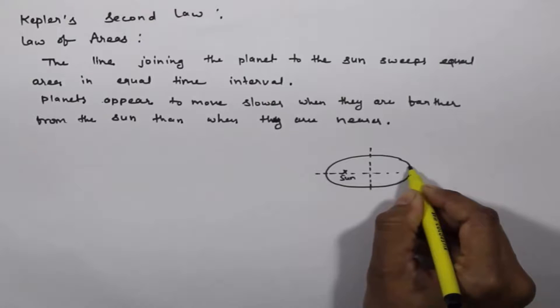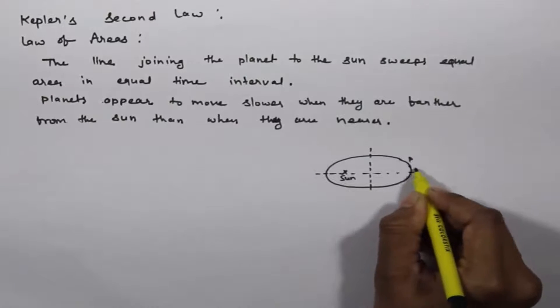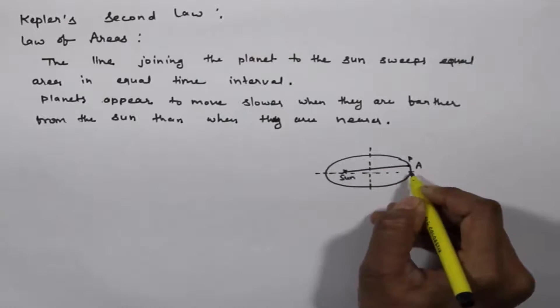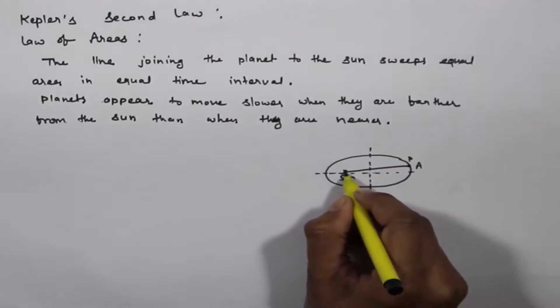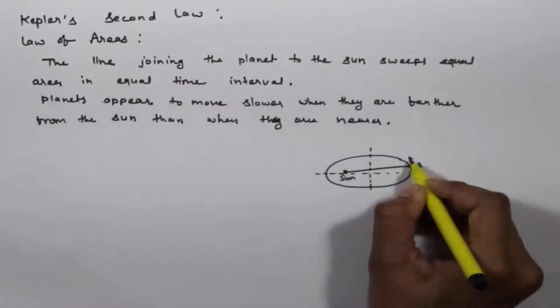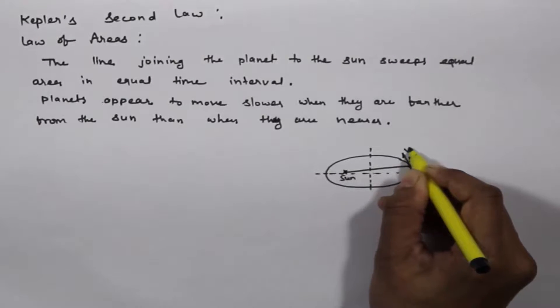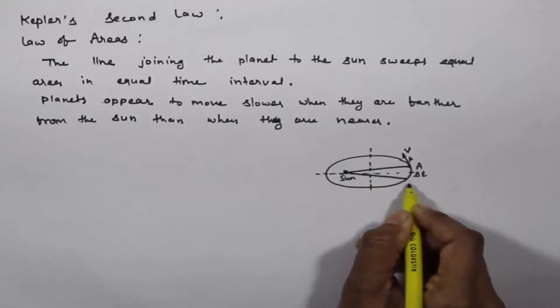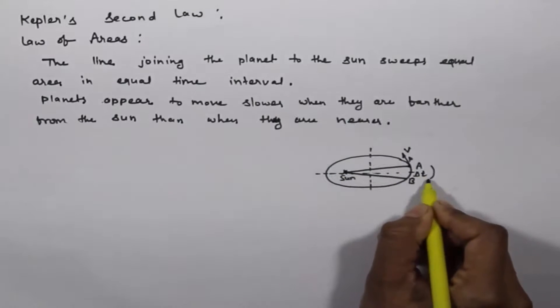If a planet P is at position A, the line joining P to the sun... A planet moves with velocity V. After the time interval del T, the planet is at position B.